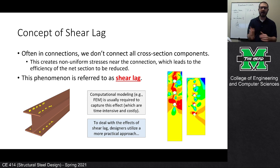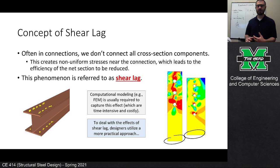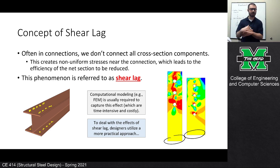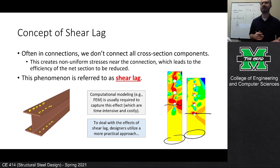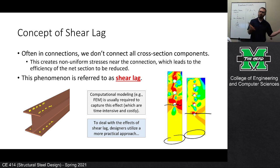Beyond that, the physics and mechanics of connections in general tend to create non-uniform stresses around the connection. When you run a full 3D finite element analysis in software like Abaqus — doing nonlinear analysis of a tension member under structural loads — what you find is that in the main body (the gross section), stresses are fairly uniform. But right at the net section where the connection is, the stresses are non-uniform and complex. It takes time for those stresses to propagate and distribute throughout the tension member.